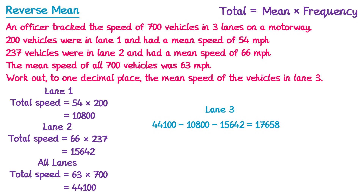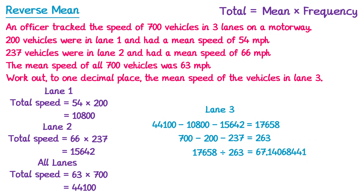So 17,658 is the total speed of all vehicles in lane 3. To work out the mean, we divide by how many vehicles are in lane 3. We're told there are 700 in total, 200 in lane 1, and 237 in lane 2, so lane 3 has 700 minus 200 minus 237, which gives 263 vehicles. So the mean speed is 17,658 divided by 263. The question asks for one decimal place, so we round to 67.1 miles per hour.